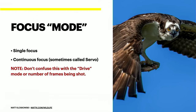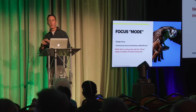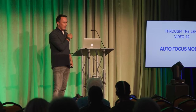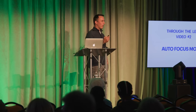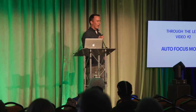Autofocus — two areas: focus mode and focus area. Focus mode is going to be single or continuous — some cameras call it servo. Don't confuse this with drive mode, which is single frame or multiple frames per second. For fast action, we're generally going to be on a lot of frames per second — that's drive mode. For focus mode, we're talking single versus continuous, and I have another video to demonstrate.